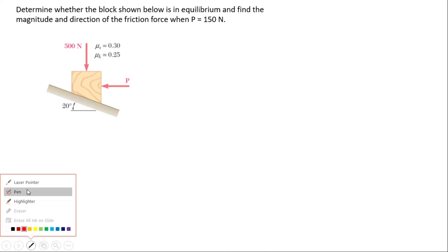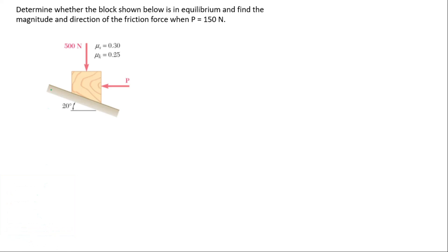Now let's start with the question given to us: determine whether the blocks shown is in equilibrium and find the magnitude and direction of the friction force when P is 150 newtons. This external force is pushing the block up the incline, and the block is moving at an inclined angle of 20 degrees.